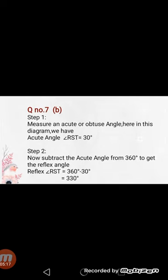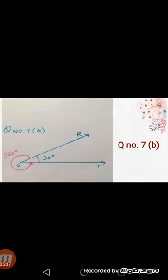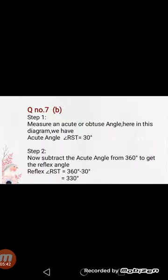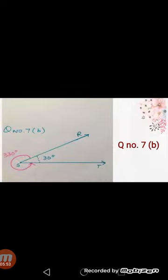Similarly, in question number 7, part b, first you will see the diagram and measure the internal angle. Step 1: measure the acute or obtuse angle. Here in this diagram, angle RST inner angle is 30 degrees, as you can see in the diagram. Step 2: subtract the acute angle from 360 degrees to get the reflex angle. We subtract 30 degrees from 360 degrees, and you can see that in pink color, the 330 degree reflex angle is shown.